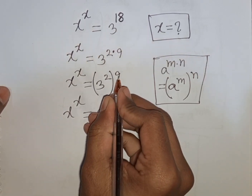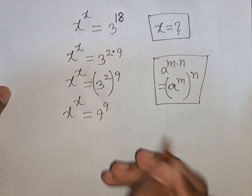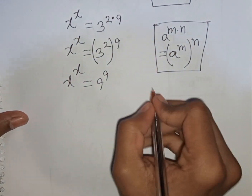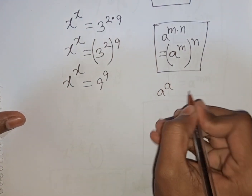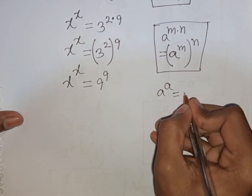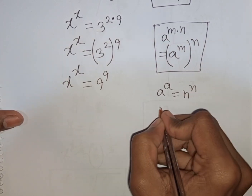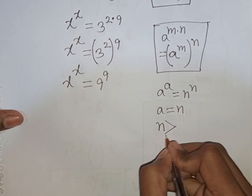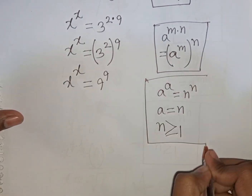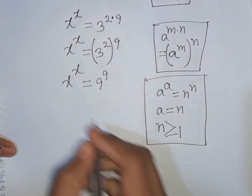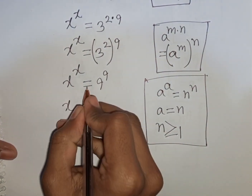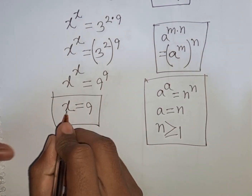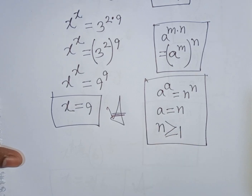Now we can write x power x is equal to 3 squared, which is 9, then bracket power of 9. Here we apply the rule: a power a is equal to n power n, where n is greater than or equal to 1. According to this rule, x is equal to 9. This is the value of x and our final answer.